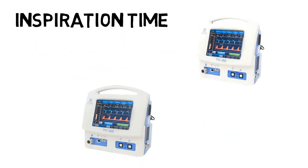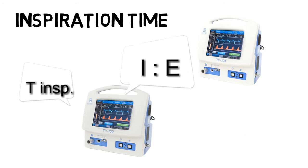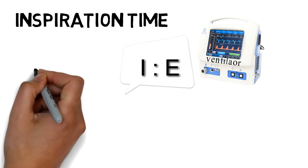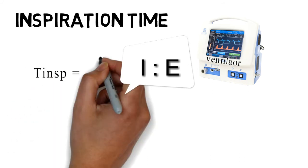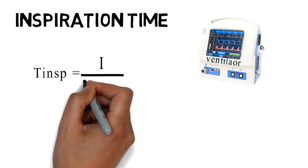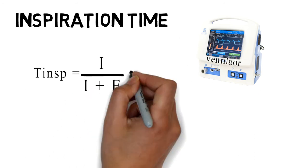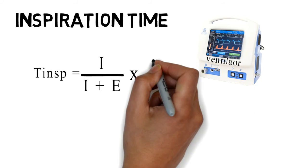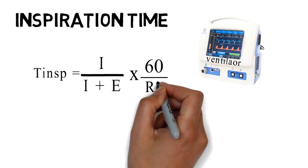The next is inspiration time. Most ventilators offer either the ability to change the absolute inspiratory time in seconds, or the ability to change the ratio of inspiratory to expiratory time. What can we do if we are given the desired inspiratory to expiratory time and have to set the inspiratory time? We have the formula for the inspiratory time as I divided by I plus E, multiplied by 60, divided by RR.